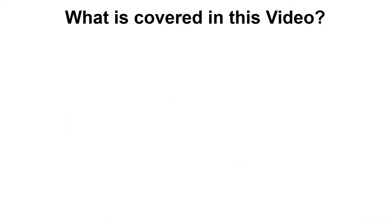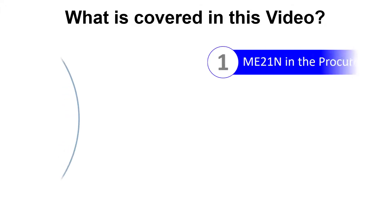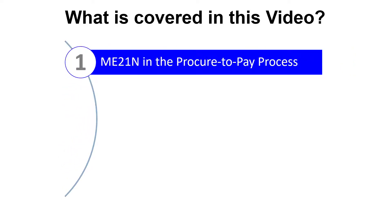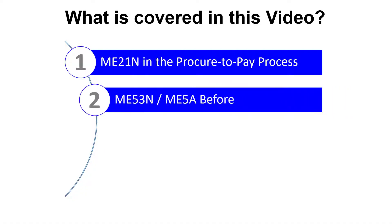Here's the content we'll be covering. We'll start by confirming where transaction code ME21N fits in the Procure-to-Pay process. Before converting the purchase requisition into a purchase order, we'll review the status of the purchase requisition using transaction ME53N, Display Purchase Requisition, and transaction ME5A, Purchase Requisition List Display.